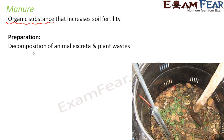Manure is prepared by decomposition of animal excreta and plant wastes. All the waste of animals and plants — for example, dead plants and animals or decaying remains — are decomposed. When bacteria and fungi act on dead and decaying matter, they break them down into simple inorganic substances, which act as important nutrients to the plant.